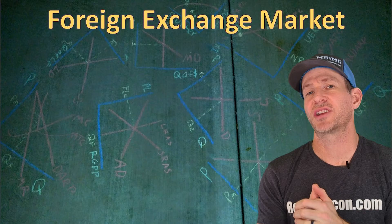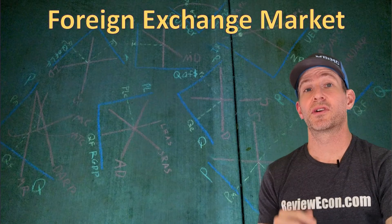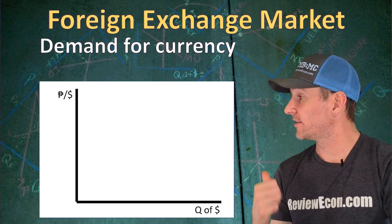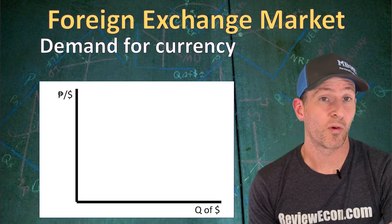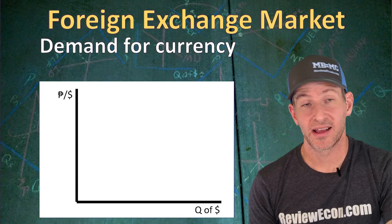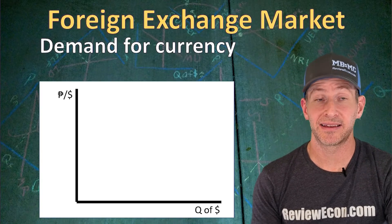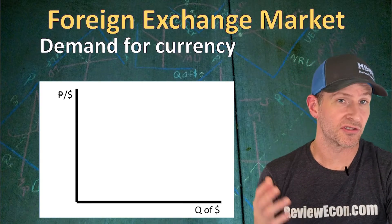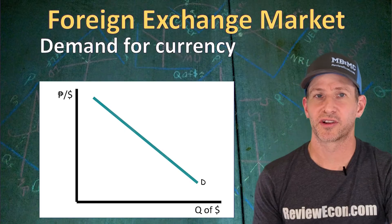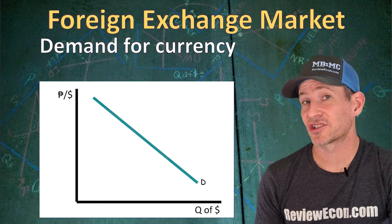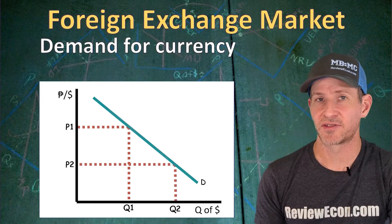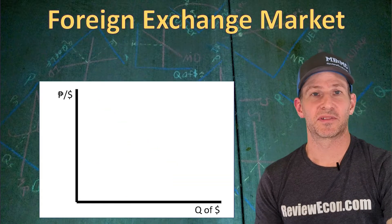Exchange rates are determined by supply and demand. When graphing foreign exchange markets, we have the quantity of currency on the x-axis — in this case, the quantity of U.S. dollars — and on the y-axis we have the price of the currency, which is pesos per dollar. The demand curve is downward sloping: at high exchange rates we have low quantity demanded, and at low exchange rates we have a higher quantity demanded.